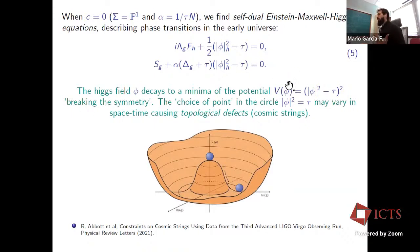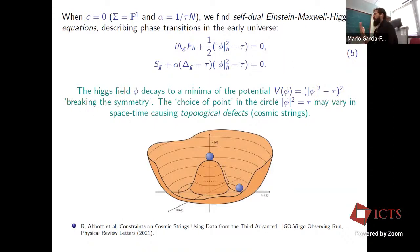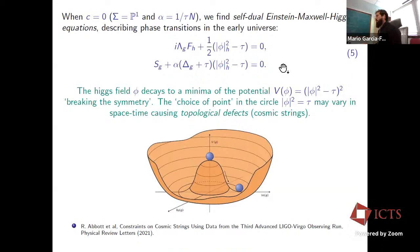An important conceptual difference between these equations and the abelian vortex equations is that the interpretation of phi is different: here phi is a Higgs field, while in the abelian vortex equation it is like a wave function for the electron. These solutions of Einstein equations coupled with matter are produced via the so-called Kibble mechanism.